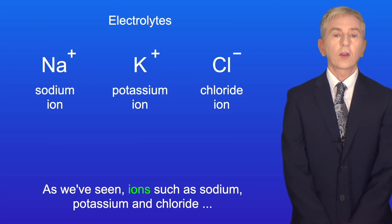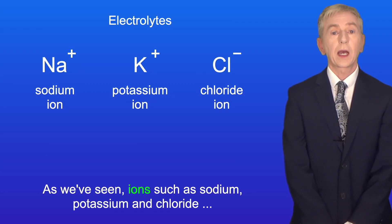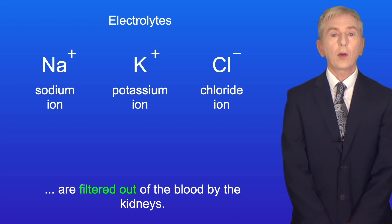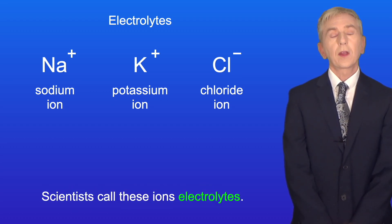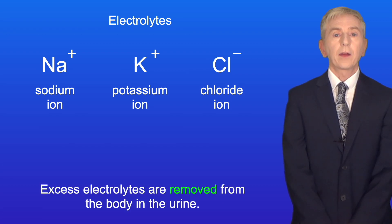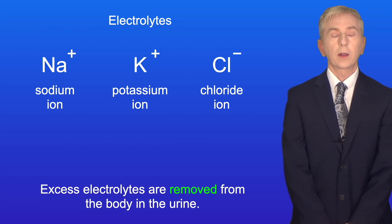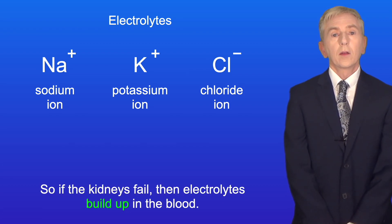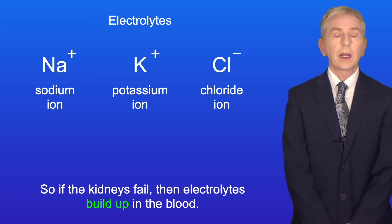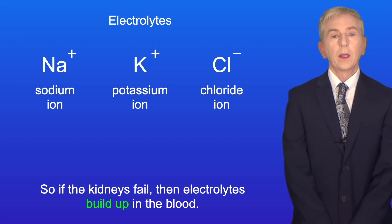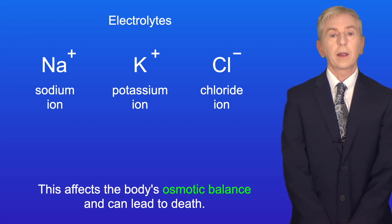As we've seen, ions such as sodium, potassium and chloride are filtered out of the blood by the kidneys. Scientists call these ions electrolytes, and excess electrolytes are removed from the body in the urine. So, if the kidneys fail, then electrolytes build up in the blood. This affects the body's osmotic balance and can lead to death.